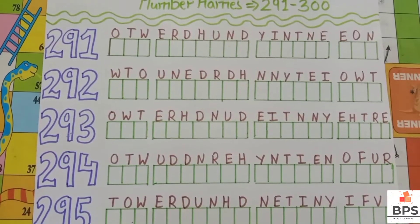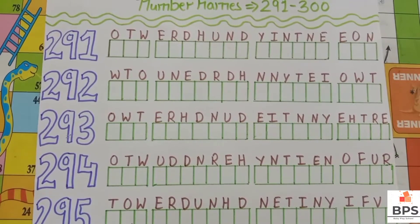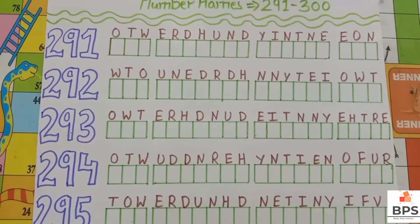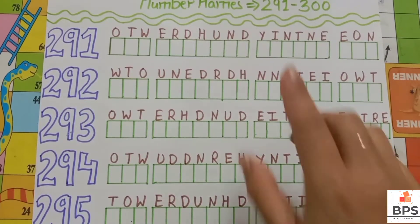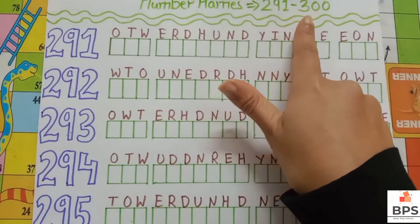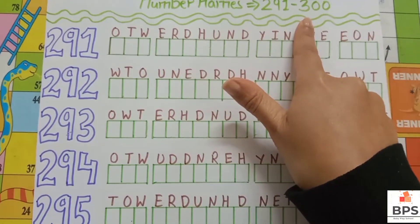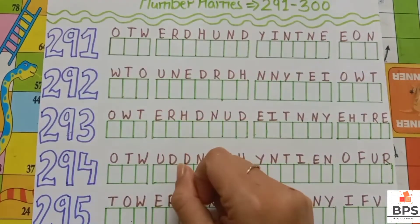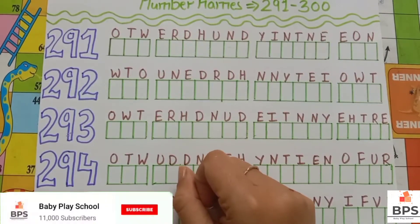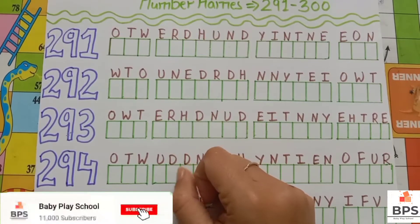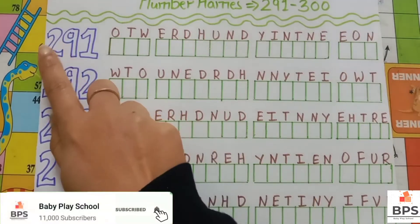Hello everyone, welcome back to our channel. Today let's do the number names two hundred ninety one to three hundred. Before watching our video, don't forget to like, share, and subscribe to our channel. So let's do the number names.